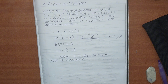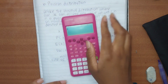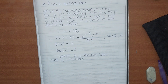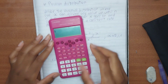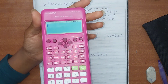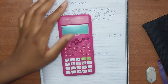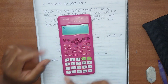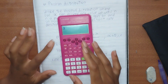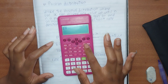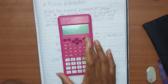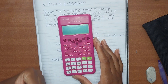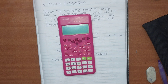There's a factorial sign in the Poisson formula. Using the calculator, for example for two factorial, you press two, then shift, then the x to the power of minus one key to access the factorial function. For combinations, I'll show you how to use the calculator in the counting principles video.